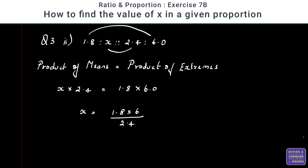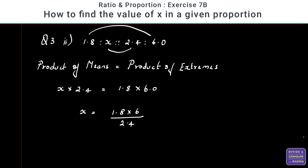To remove the decimal, the numerator has one decimal place and the denominator has one decimal place, so we multiply both numerator and denominator by 10. We get 18 into 6 divided by 24. Simplifying: 6 times 4 is 24 and 2 times 9 is 18, giving us 9 by 2, which equals 4.5. So the value of x is equal to 4.5.